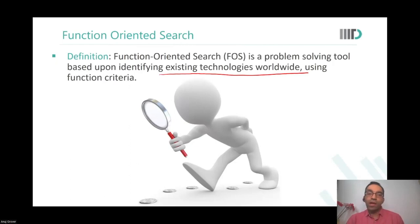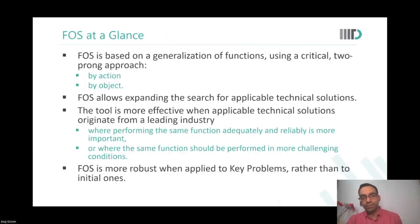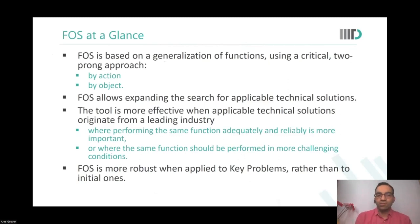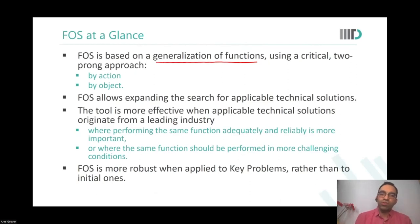Let's look at how to do FOS. In function-oriented search, what we do is we generalize the function. We generalize the function using a two-prong approach: first, we generalize it by action, then we generalize it by object.